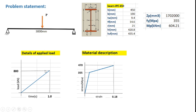A simple calculation of the plastic moment capacity shows that the beam is likely to plasticize at an approximate load of 800 kN. Accordingly, the load will be applied in a monotonically increasing way along a straight line, with a value of 0 at time t equal to 0 and a maximum of 800 kN at a time period of 1.0 seconds.